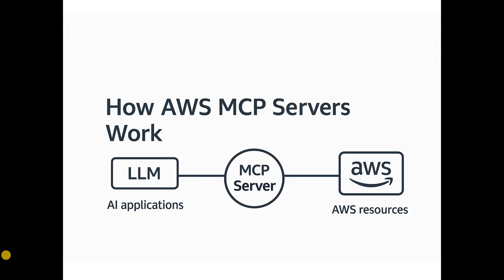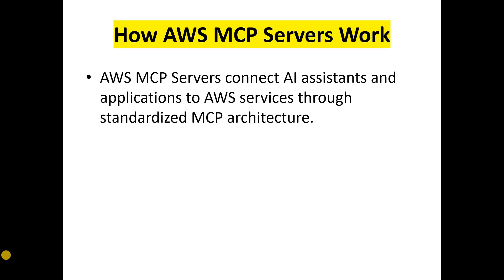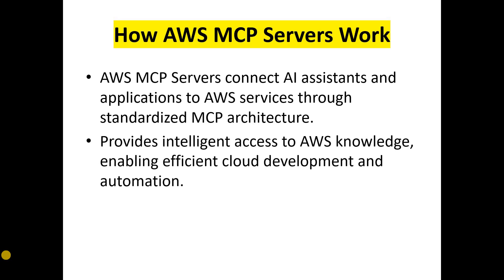This diagram depicts how MCP servers work. On the right-hand side you have AWS resources, and on the left-hand side you have the LLM AI application. The MCP server sits in between and empowers the LLM. AWS MCP servers connect AI assistants and applications to AWS services through a standardized MCP architecture, providing intelligent access to AWS knowledge and enabling efficient cloud development and automation.